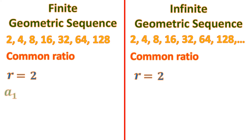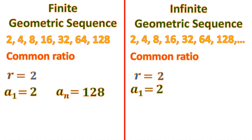Both sequences have a first term, a sub 1. The first term, a sub 1, equals 2 for the finite geometric sequence, and a sub 1 also equals 2 for the infinite geometric sequence. However, the last term — a sub 7, which is 128 — exists only for the finite geometric sequence. For the infinite geometric sequence, there is no last term.